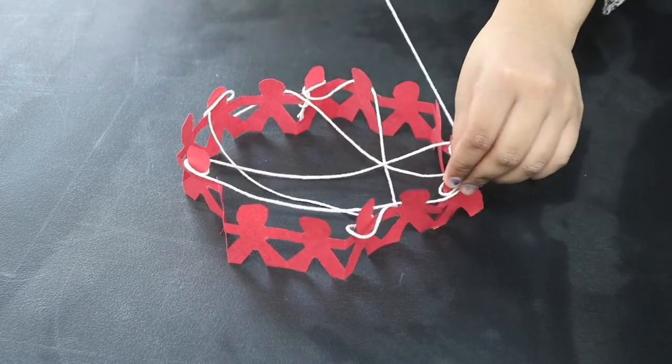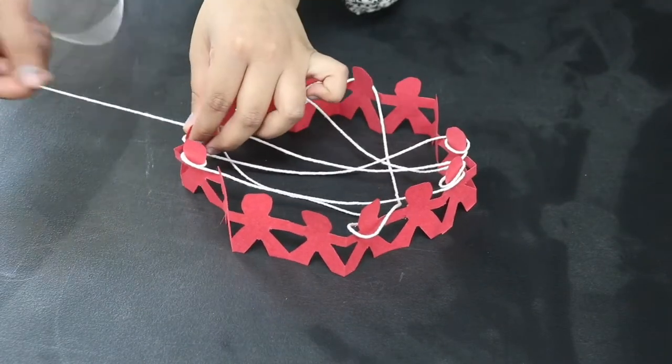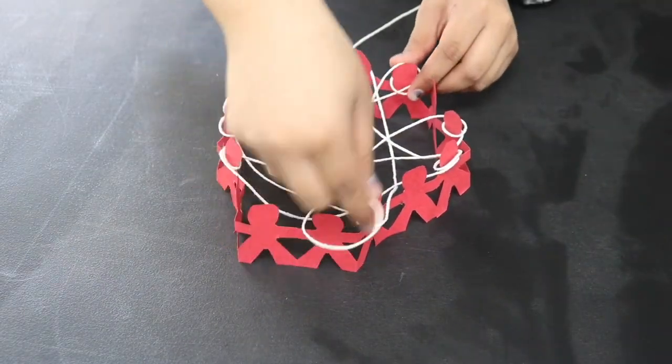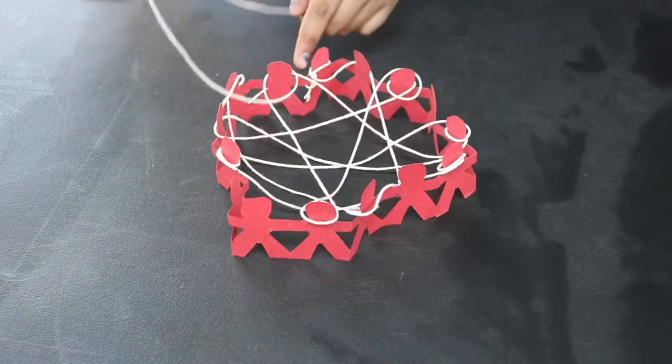The first person will hold tightly to one end and toss the rest of the string to another person across the group. The second person will name one thing in the ecosystem that uses energy from the sun.